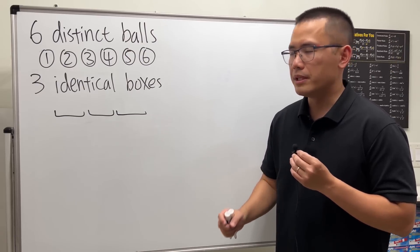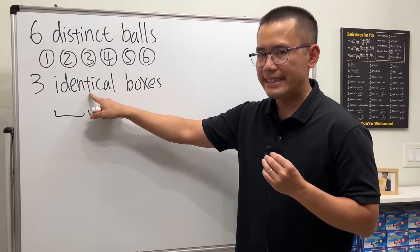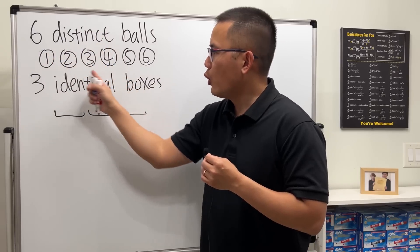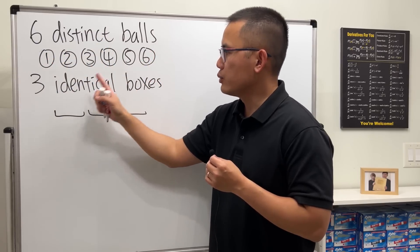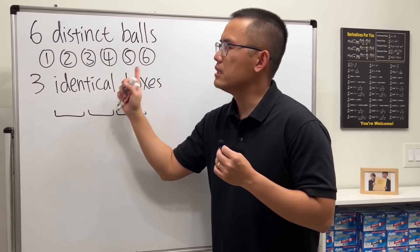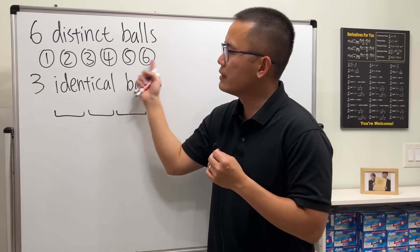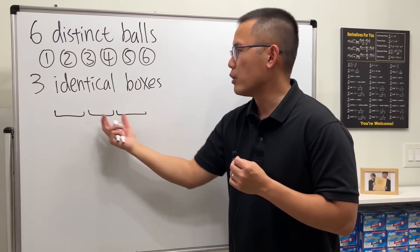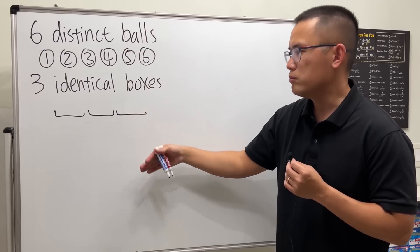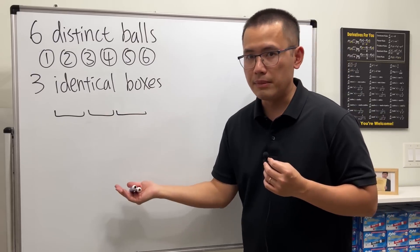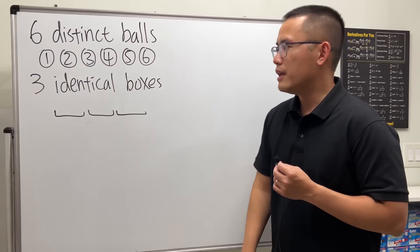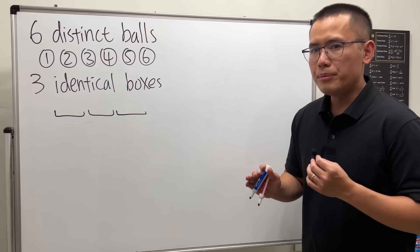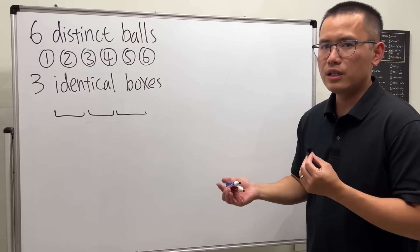The reason this is a hard question is because the boxes are identical. If you put all six balls into one box, it's the same as if you put all the balls into another box, because the boxes are indistinguishable. So it doesn't matter which box you put all six balls into — it gets really tricky.